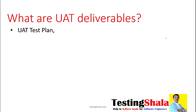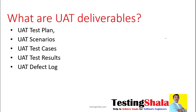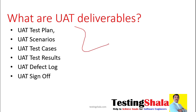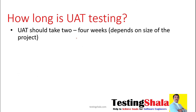What are the key UAT deliverables? The first is the UAT test plan, where overall test planning activities and test strategy are defined. The second is UAT scenarios written based on user stories, followed by test cases. Executions are done, defects are logged, and finally the UAT sign-off is also a key deliverable as part of UAT testing.